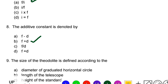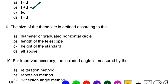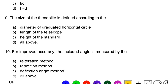Next question: the size of a theodolite is defined according to — option A: diameter of the graduated horizontal circle, option B: length of the telescope, option C: height of the standard, option D: all of the above. The correct answer is option A, diameter of the graduated horizontal circle.